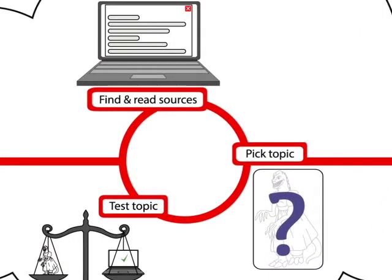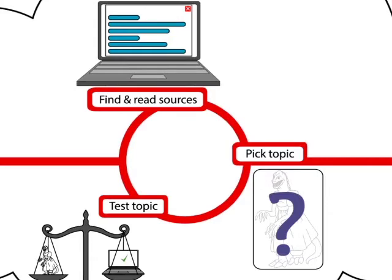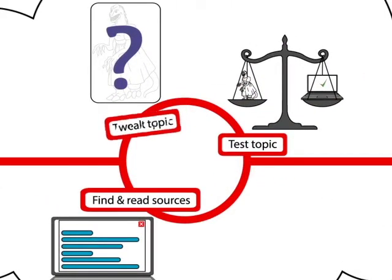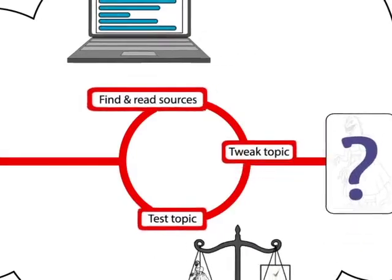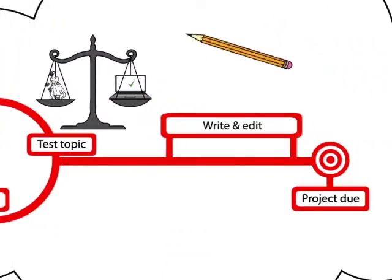At this point, you might find that the published research leads you away from your original topic. That's okay. You can let the research you find guide you and tweak your topic a bit. And by the time you've gone through this cycle a few times, you may find that you have enough sources to start writing and editing your paper.